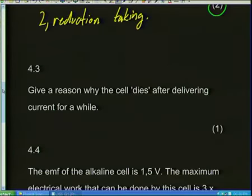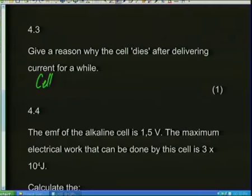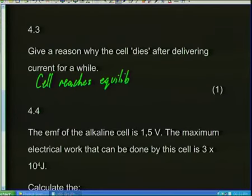Question 4.3: give a reason why the cell dies after delivering current for a while. You've all been there — your music player or torch starts playing nicely then suddenly it's not playing anymore. Why does it die? You've got to remember that these chemicals run out. I will no longer have any zinc; my reducing agent and my oxidizing agent will run out. They'll transfer the electrons and finish. The cell reaches equilibrium by running out of reactants, meaning there is no more energy trapped inside it.